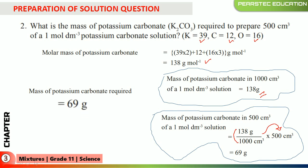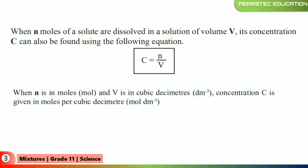This is what we did in our previous lesson as well. Now let's get into the real concept. When n moles of a solute are dissolved in a solution of volume V, the concentration C can be found using the equation C = n/V. When n is in moles and V is in cubic decimeters, concentration C is given in moles per cubic decimeter.